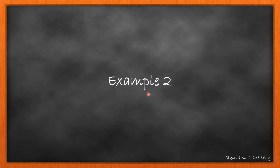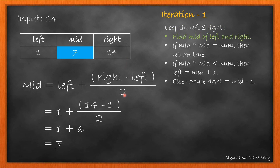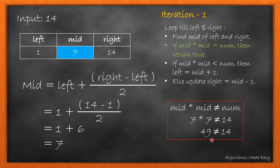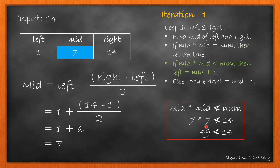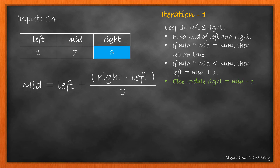Moving on to example 2. Initially, left will be 1 and right will be 14. Since the looping condition is true, we move ahead with our first iteration. We will calculate the mid. We will check if its square is equal to num. As it is not equal, we move to the next step. Also, the square is not less than num, so we move to the else part and update right to mid minus 1.